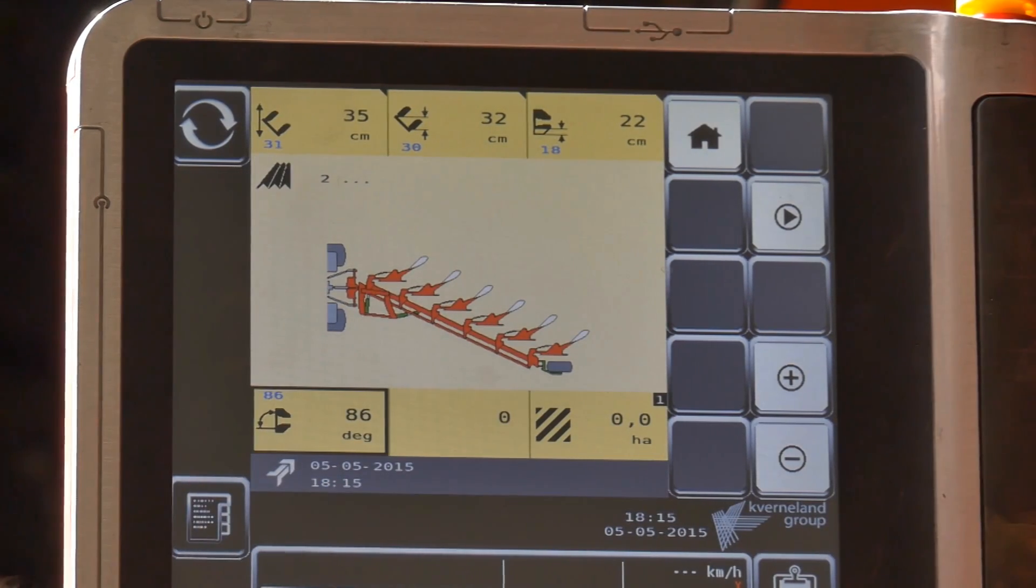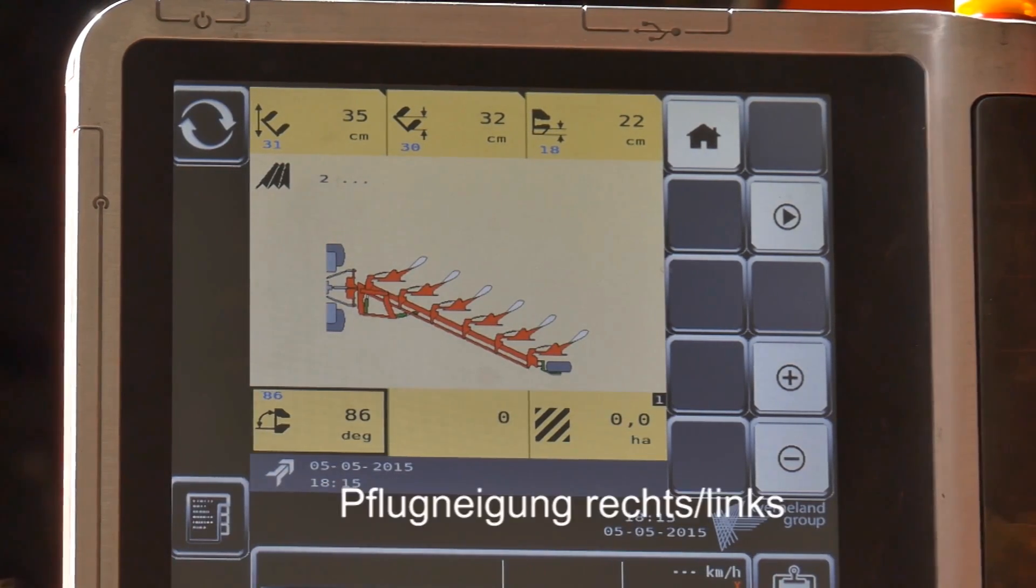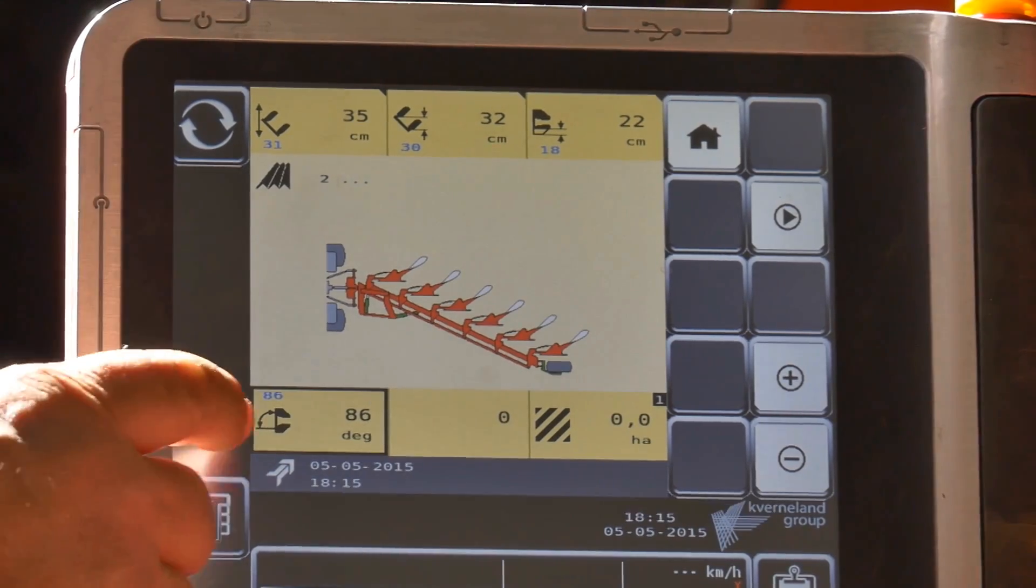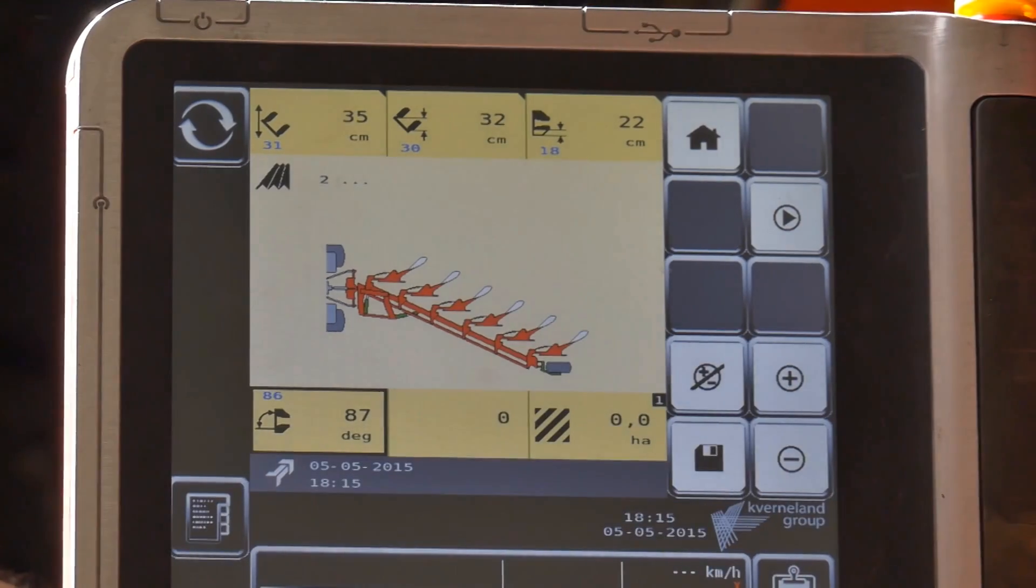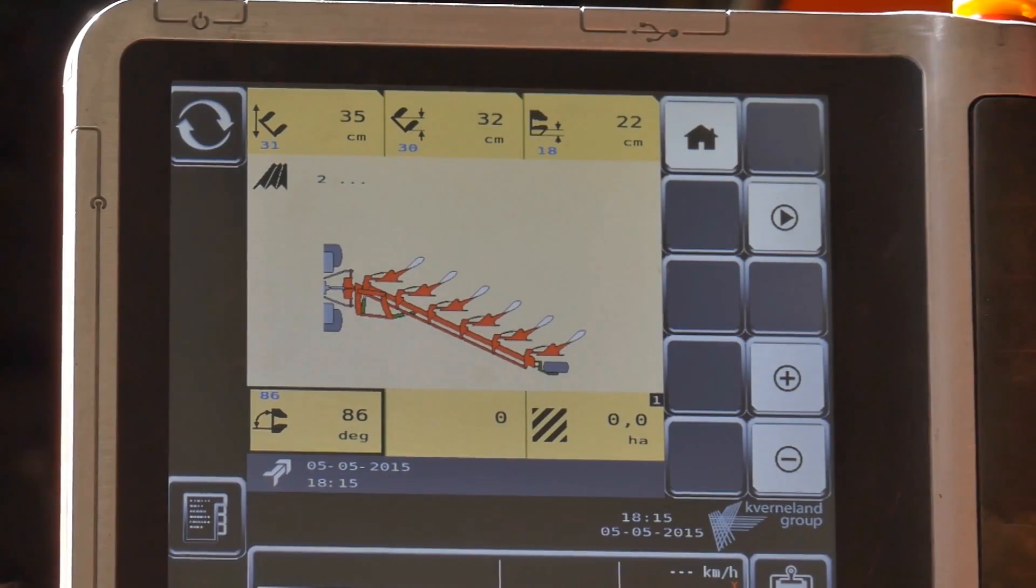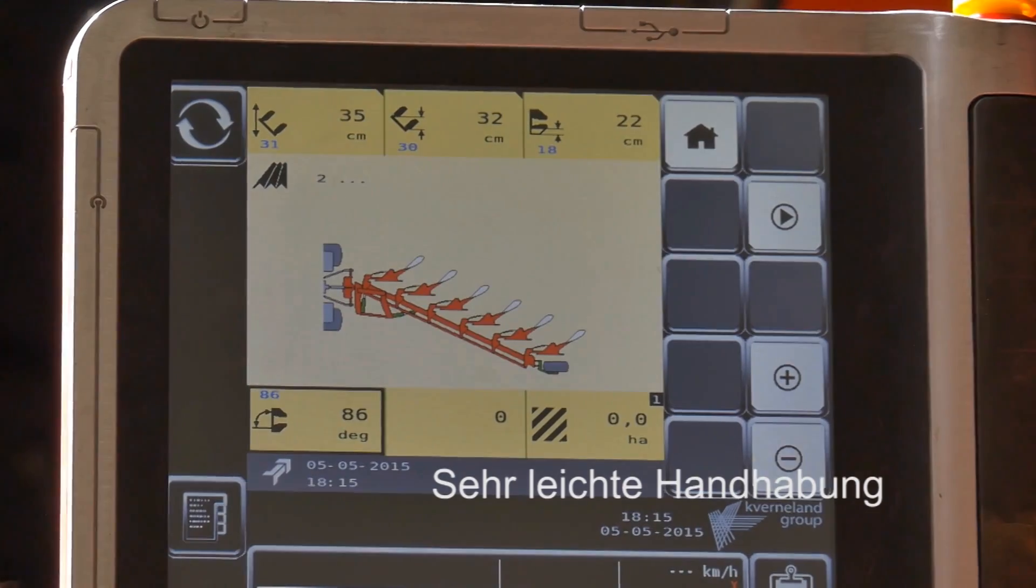Then we have the turning, the turning of the plow. It's in degrees so you have to go one degree more or one degree less. It's very easy to handle, very simple.